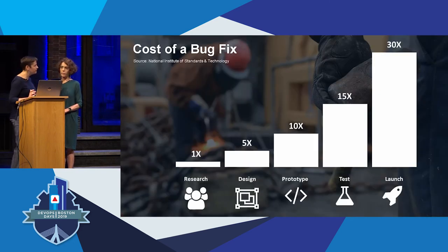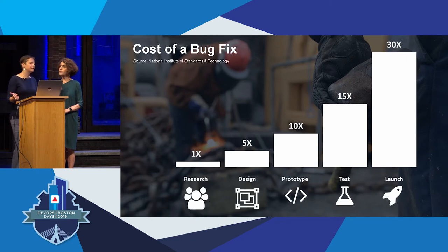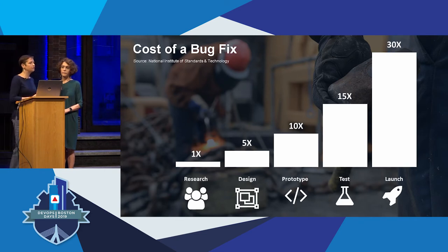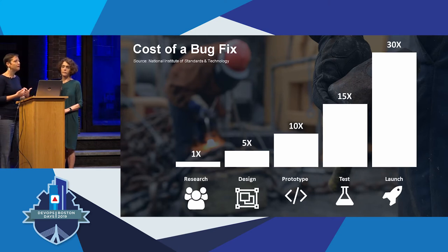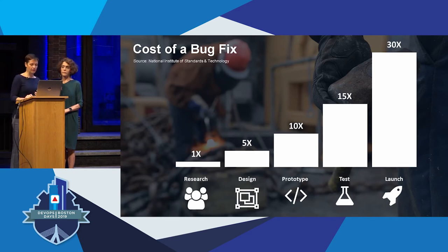The cost of a bug fix is the same as the cost of an accessibility barrier. The cost of fixing something exponentially increases throughout your process. That's why we encourage everyone to include accessibility reviews at your design stage. We review wireframes all the time — we can spot things that are going to be potential barriers and advise you on how to implement them before a barrier presents itself.